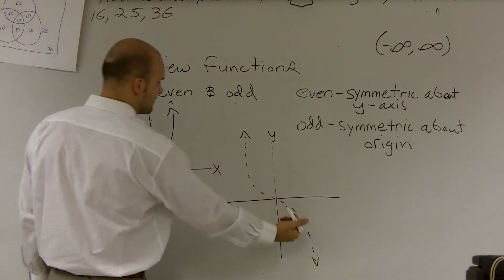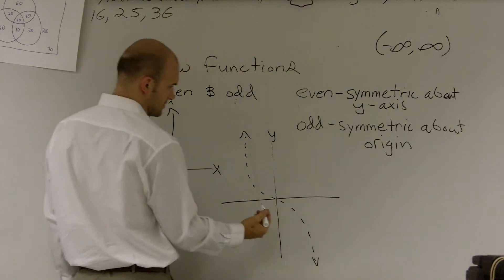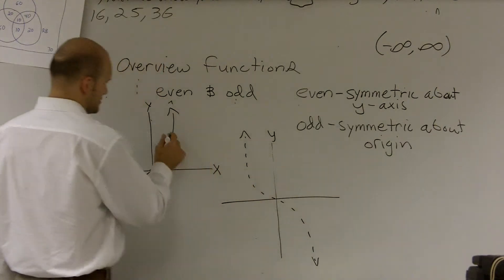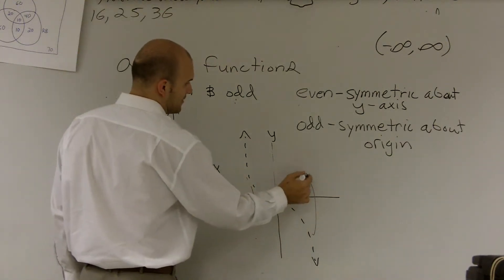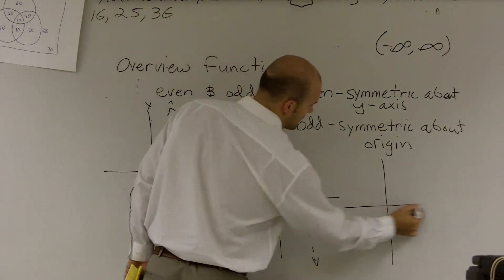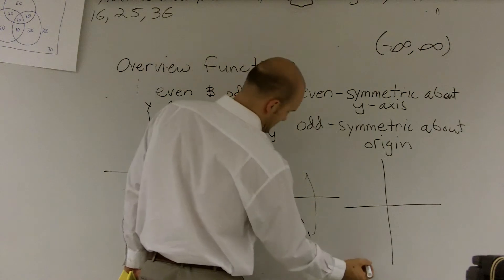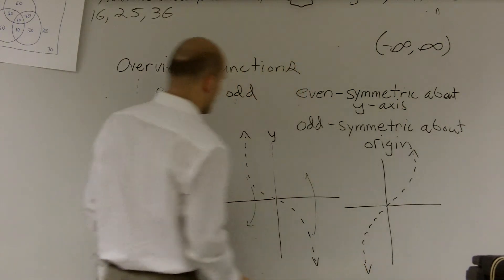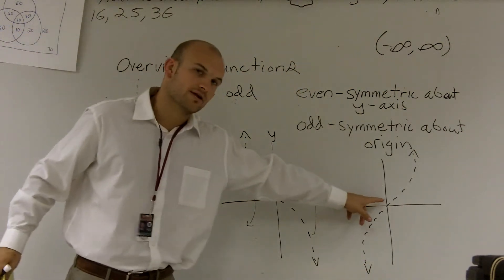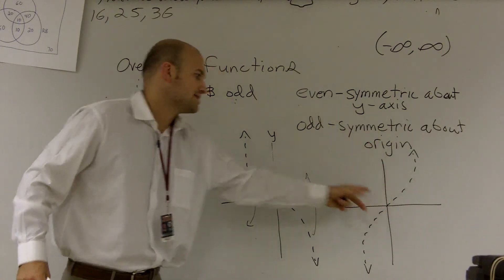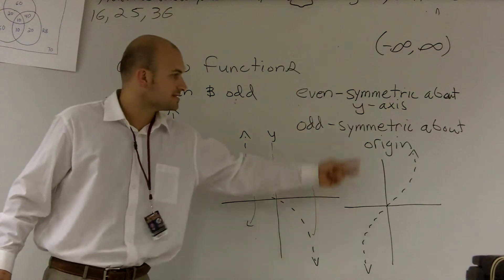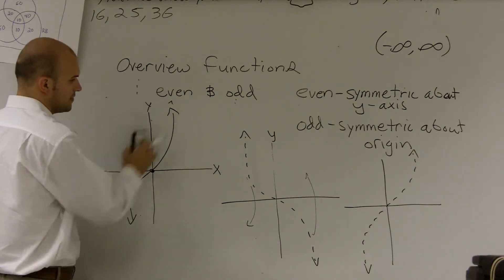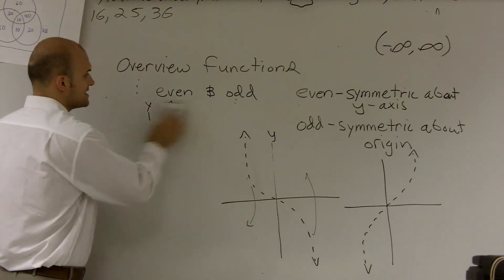Then, if I reflected about the x-axis, this is going to go down there. So now this is going to flip down there, and that's going to flip up. Then I go back to my original function and I say: now that I've reflected it about the y-axis and the x-axis, does that look like my original function? And if the answer is yes, then it's symmetrical about the origin. So a cubic function like this is symmetrical about the origin, and that is how you test to see if it's symmetrical.